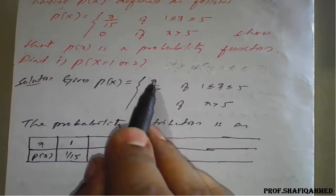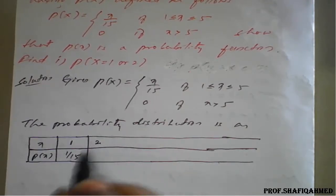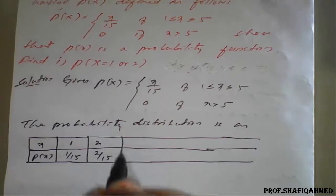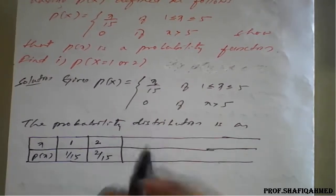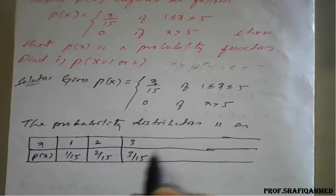When X is 2, P of X will become 2 upon 15. When X is 3, this will become 3 upon 15.